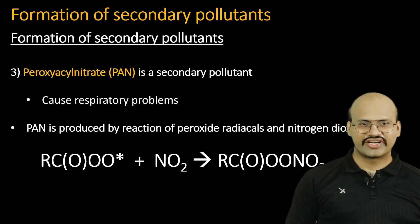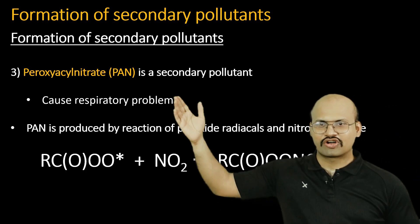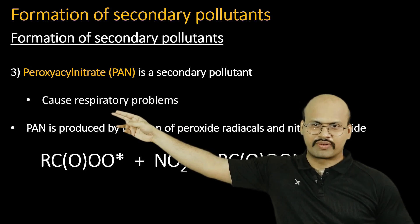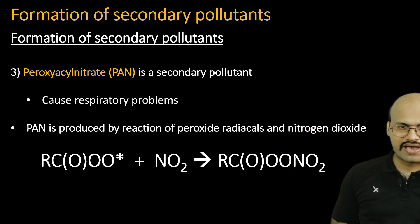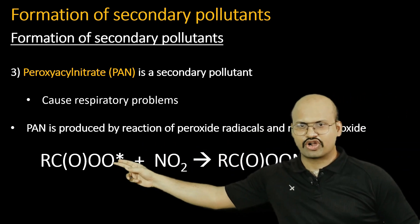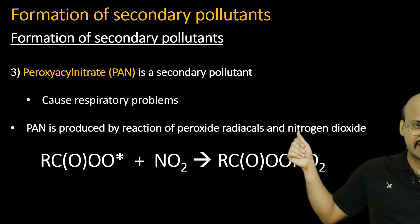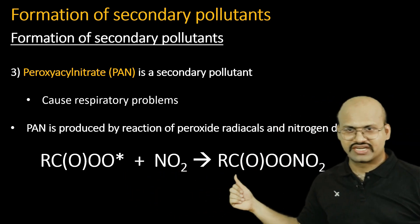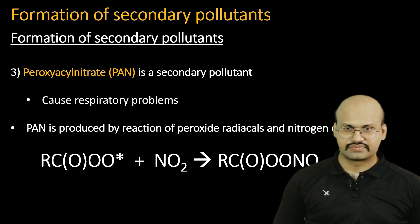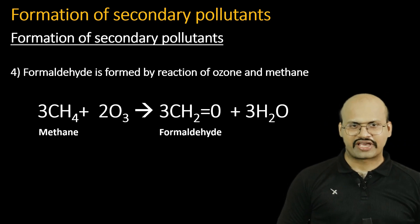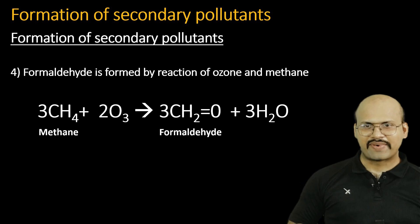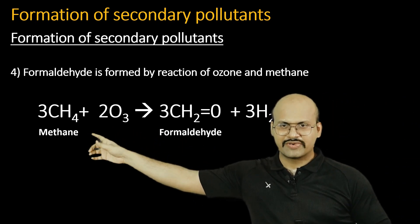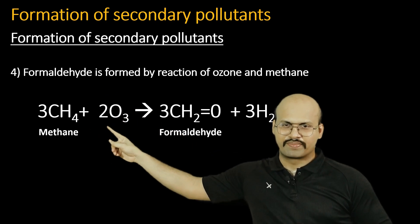The most important secondary pollutant is PAN, also called peroxyacyl nitrate, which causes severe respiratory problems. PAN is produced by reaction of peroxy radicals with nitrogen dioxide. Formaldehyde is also created in photochemical smog — it is created by the reaction of ozone and methane.